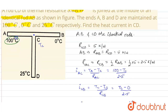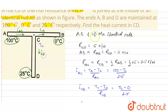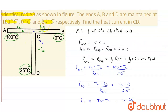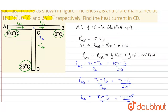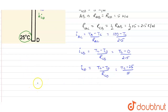Looking at the figure, temperature at A is 100°C and temperature at B is 0°C, so heat current flows from A toward C. Temperature at D is 25°C, which is lower than at A, so the heat current from AC gets divided at point C into two parts: heat current in CB and heat current in CD. Therefore: heat current in AC = heat current in CB + heat current in CD.